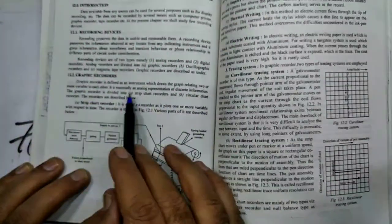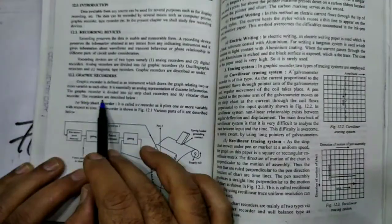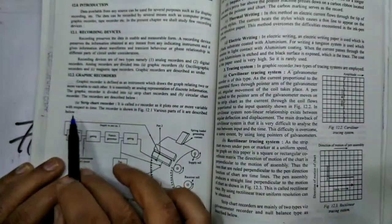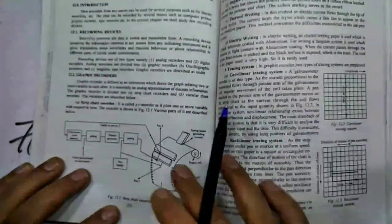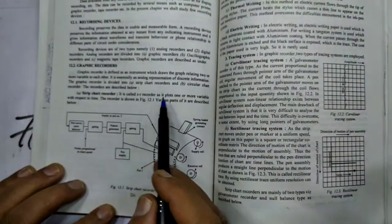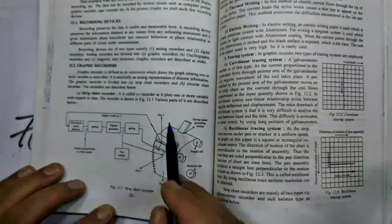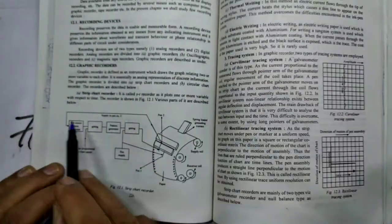The graphic recorder is divided into a strip chart recorder and circular chart recorder. The recorders are described below. First one is strip chart recorder. It is called X to T recorder as it plots one or more variable with respect to time. The recorder is shown in the figure. Various parts of it are described below.